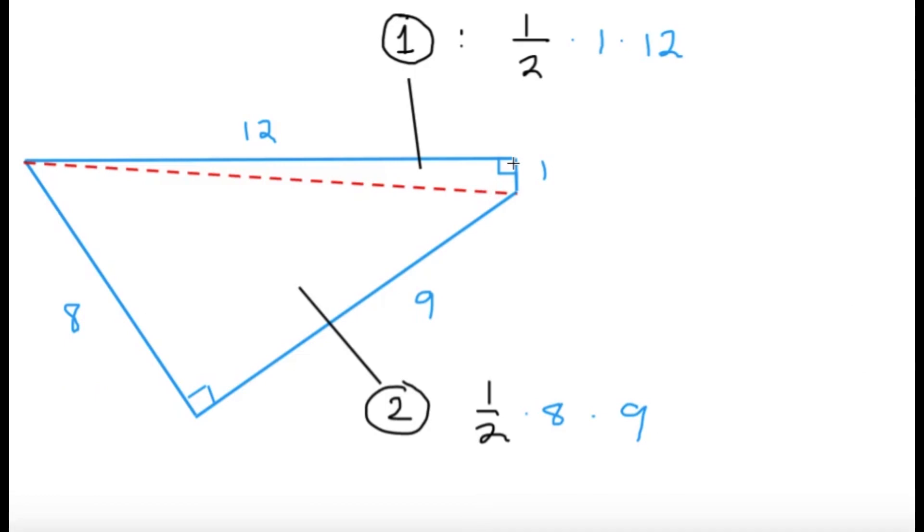Now since it's a right triangle, just 1 half times the first leg times the second leg. 1 half times 1 times 12, the 2 and the 12 cancels nicely, so the answer here is just 6.